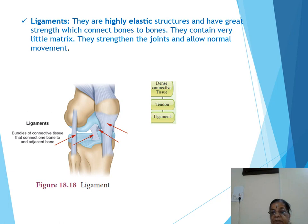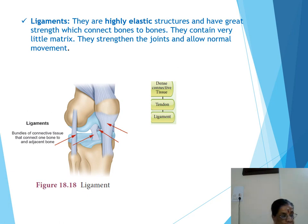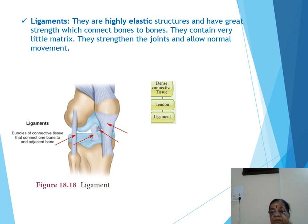Both tendons and ligaments are dense connective tissue. Tendons connect skeletal muscles to bones, whereas ligaments connect bone to bone. We have now learnt supportive connective tissue (cartilage and bone), dense connective tissue (tendons and ligaments), and connective tissue proper (areolar connective tissue and adipose tissue).